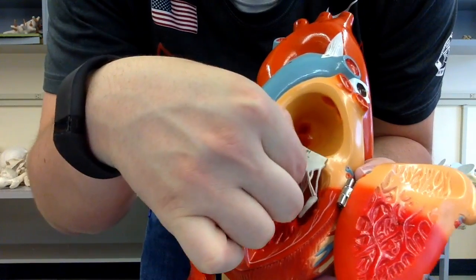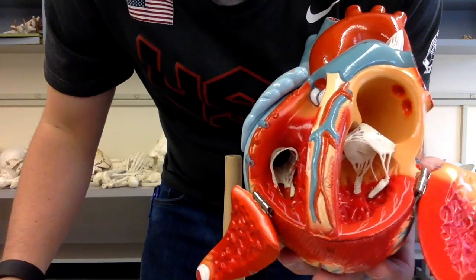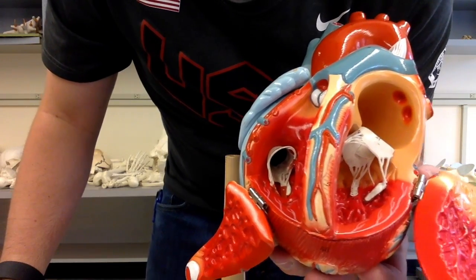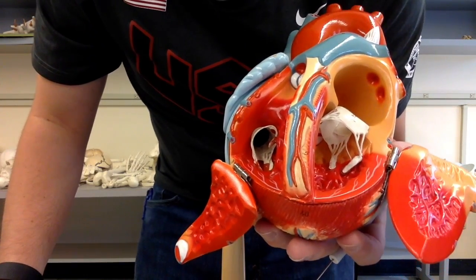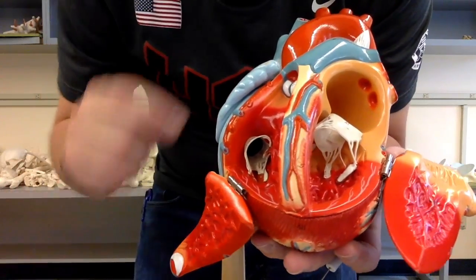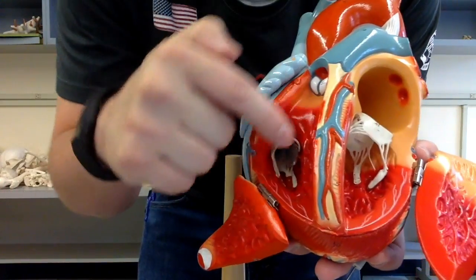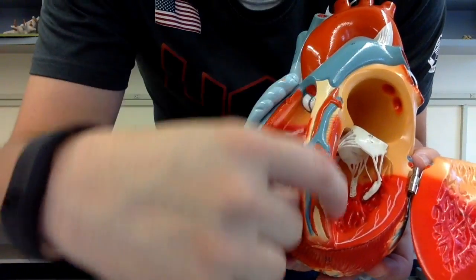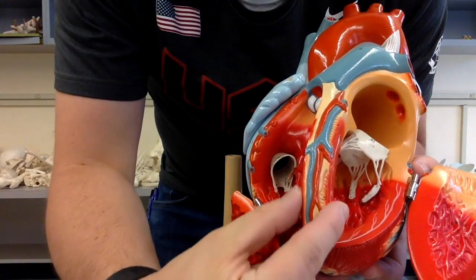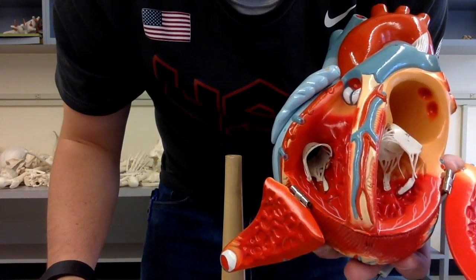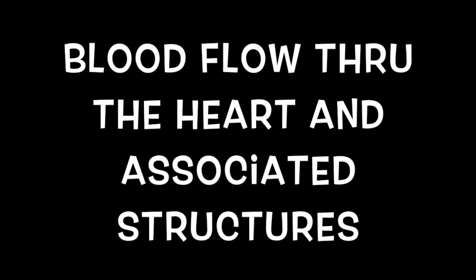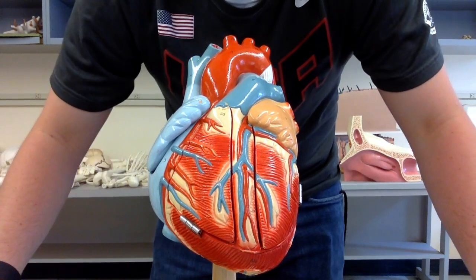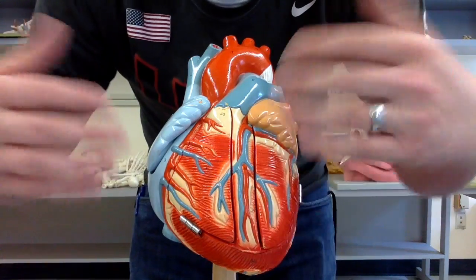You can see these string-like structures coming down from the valves — those are the chordae tendineae, which anchor down onto the papillary muscles within the trabeculae carneae. Our last term for internal anatomy is the interventricular septum. You can see the two ventricles — the right ventricle and the larger left ventricle — and the structure that divides them is the interventricular septum.